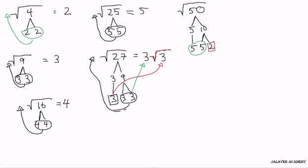So we rewrite this. This is equivalent to 5 comes out, so we get 5 radical and the 2 stays in. 2. Notice this is the 2. We could not pair this 2. But the 5 we paired.